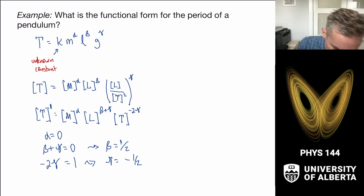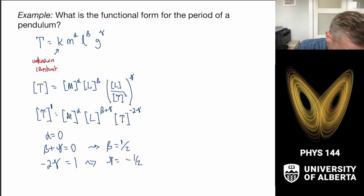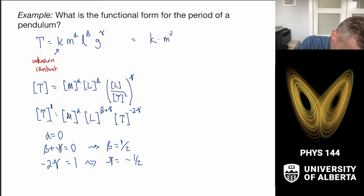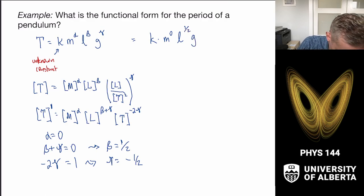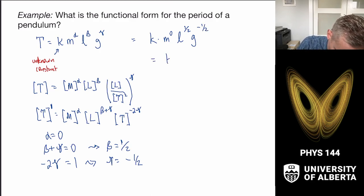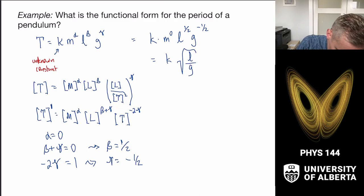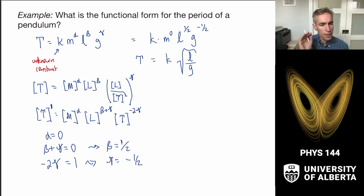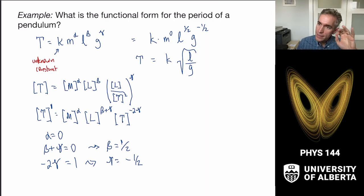So what does this mean? We can take these powers and substitute them back into our equation: T = k × m⁰ × L^(½) × g^(−½). The mass goes away. Length over g — so T = k√(L/g). We have deduced a functional form up to a constant for the period of the pendulum. Interestingly, it depends on the length and the gravitational acceleration, but it doesn't depend on the mass.